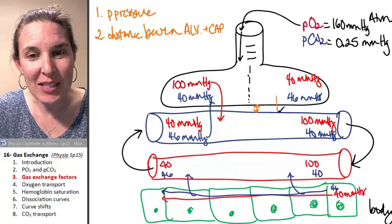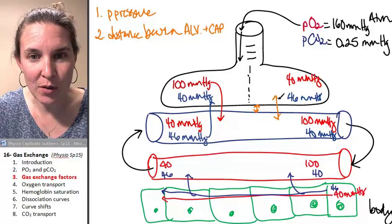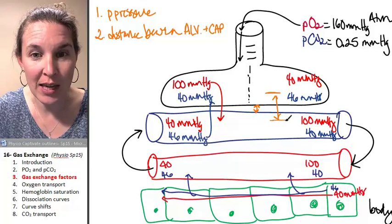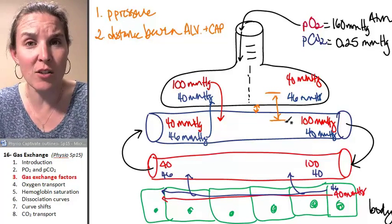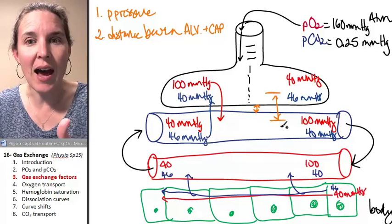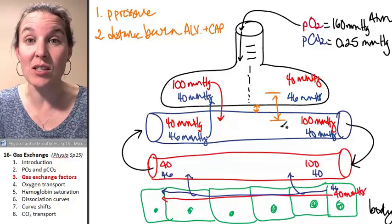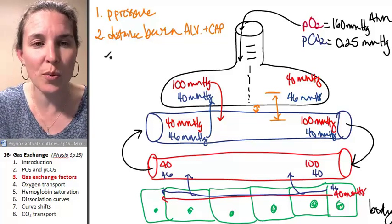The larger the space, if for example the alveoli was up here and the capillary was down here, there was a bigger space, that's more distance that the gases are going to have to diffuse across, and that is going to affect the efficiency of gas exchange. That's super intuitive.